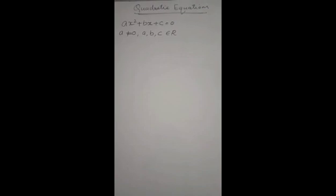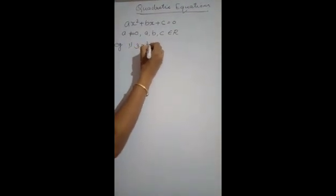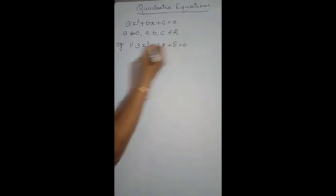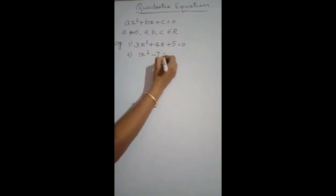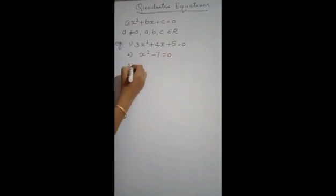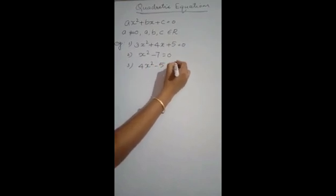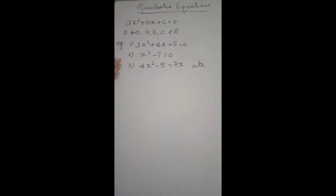Let's see some examples of quadratic equations: 3x squared plus 4x plus 5 is equal to 0; x squared minus 7 is equal to 0; 4x squared minus 5 is equal to 7x, etc. These are the examples of quadratic equations.